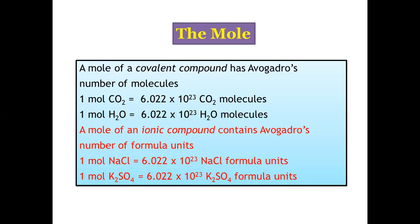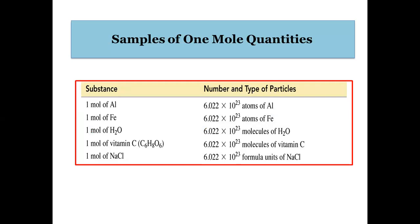For ionic compounds, one mole of NaCl will always contain 6.022 × 10²³ NaCl formula units. Since it is an ionic compound, it will dissociate into cations and anions, and that number is equivalent to 6.022 × 10²³ NaCl units. Similarly, one mole of potassium sulphate equals 6.022 × 10²³ potassium sulphate formula units. A table shows different substances — one mole each of aluminium, iron, water, vitamin C, and NaCl — all containing the same Avogadro's number of 6.022 × 10²³ units, whether atoms, ions, or molecules.